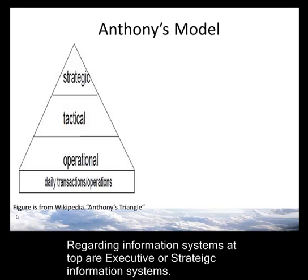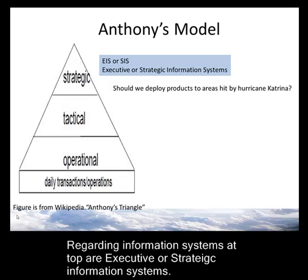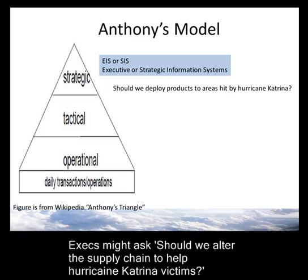Regarding information systems that support decision-making, at the top level we've got EIS or SIS — executive information systems or strategic information systems. Let's use Walmart's redeploying products to areas hit by Hurricane Katrina as an example. At the top level, the executives might ask: should we deploy products to areas hit by Hurricane Katrina, interrupting our supply train? That's a decision they'll make at the very top level.